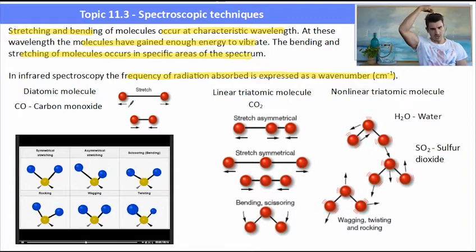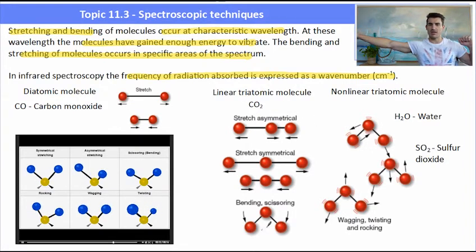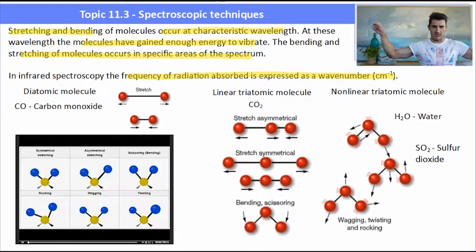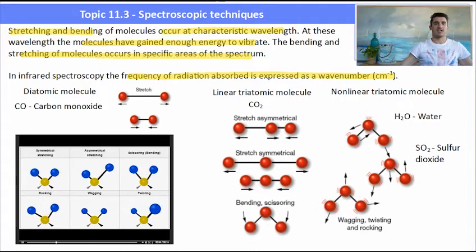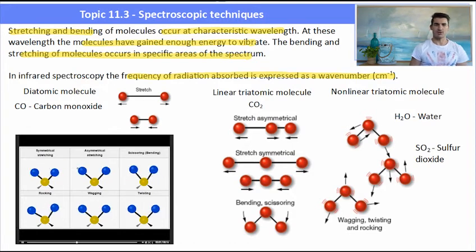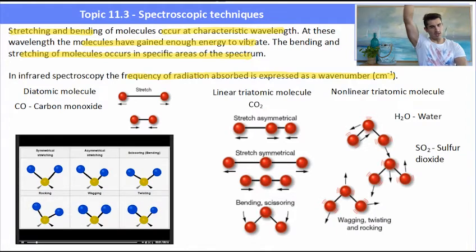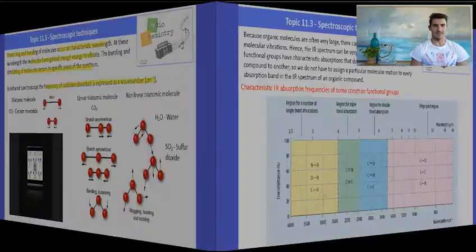If we have a triatomic molecule, my head is the molecule in the middle, we could have some asymmetrical stretching, like this. We could have some symmetrical stretching, like this. Or we could have some bending and scissoring, which looks like this. If we have non-linear molecules, we start to get a few other things happening. So we get what we call wagging, twisting, and rocking. A few of the other ones that we have, we have things going like this, and going back and forwards, which are scissoring and wagging.